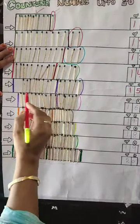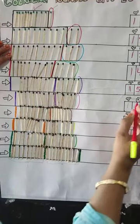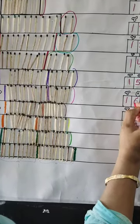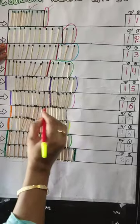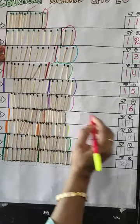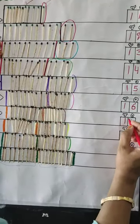Here also 1 10 and 6 1s, 16. Then again 1 10 and 7 loose magic sticks representing number 17.